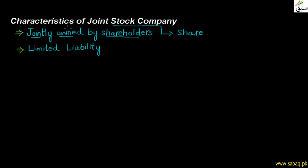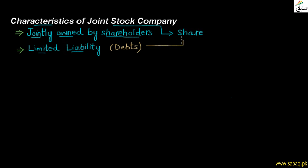The joint stock company's main characteristic is the liability of shareholders, which is limited. Limited means that if a company has received some debts, the shareholders' liability is limited to the value of their shares. The amount of their liability will be limited to their participation in the company.